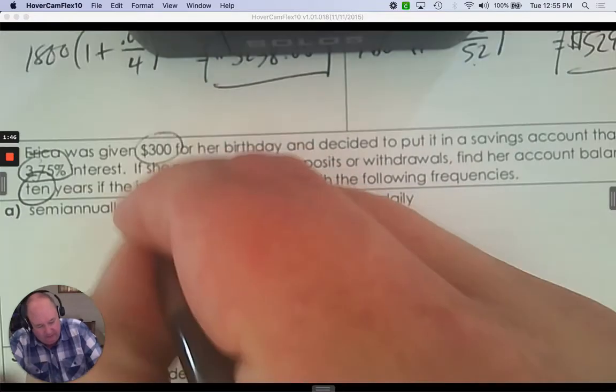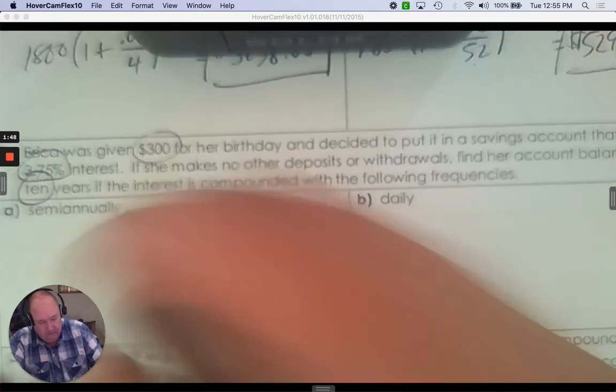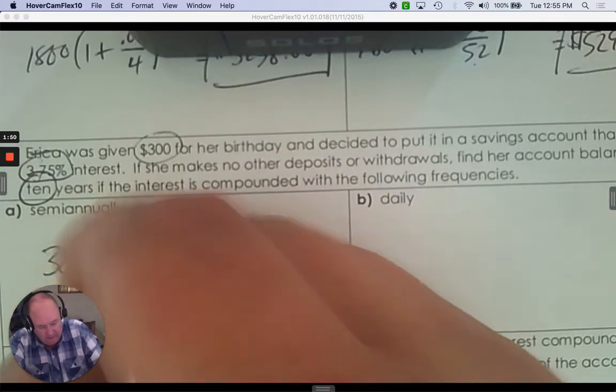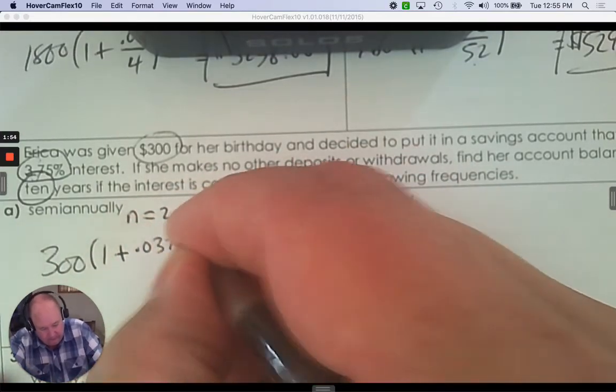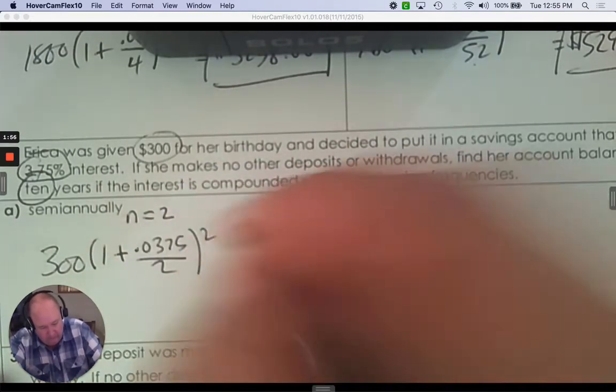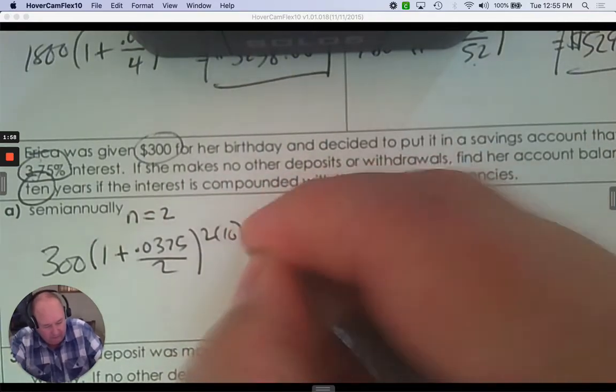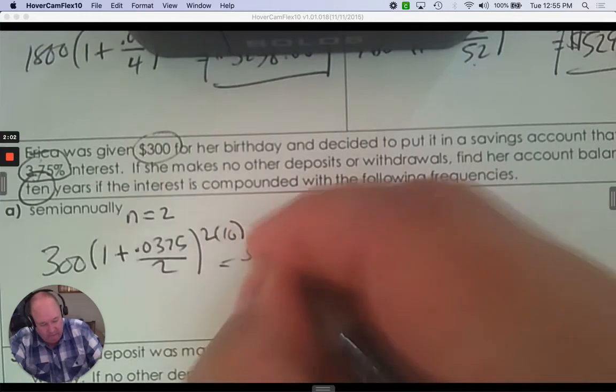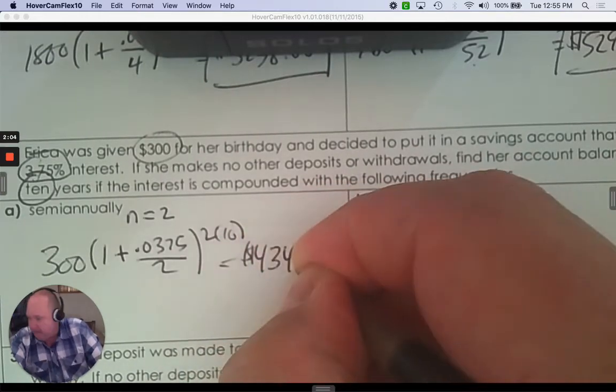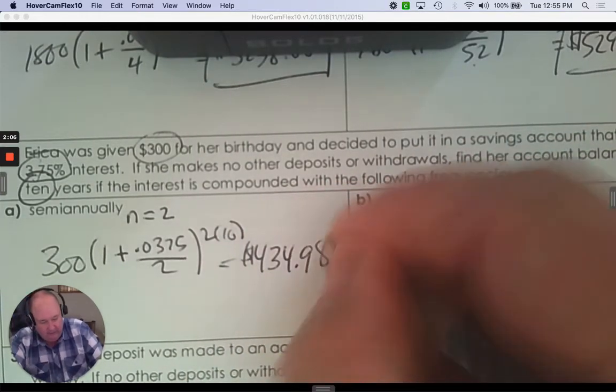Semi-annually means twice a year. So it'd be 300, one plus .0375 divided by two, and then 10 years. So that's $434.98 using your calculator.